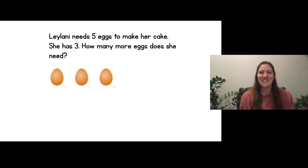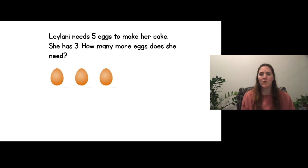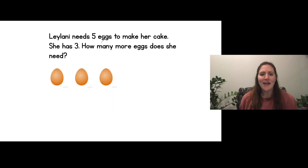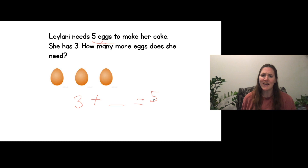Okay so I'm going to do this one first. This says: Leilani needs five eggs to make her cake. She has three. How many more eggs does she need? So I see here that it says Leilani needs five eggs to make her cake, but she only has three right now. So if she has three eggs, three plus how many more to equal five? How many more eggs does she need if she needs to have five to make her cake?